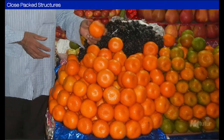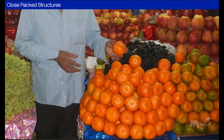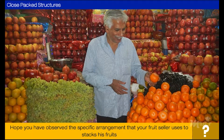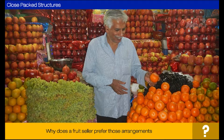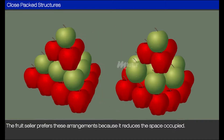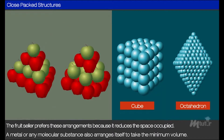Have you ever been to your fruit shop to pick the fresh ones? Hope you have observed the specific arrangement that your fruit seller uses to stack his fruits. Do you find him erecting a pyramid of his fruits? But why does he prefer those arrangements? If he stacks the fruits one above the other, he will use more space. Hence, he chooses this packing so as to reduce the space occupied. This is how a metal or any molecular substance also arranges itself to take the minimum volume.